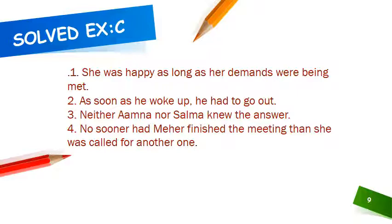Now it's exercise C time. All you need to do in exercise C is to join the sentences below with the conjunctions given in the bracket. The first, second, third, and fourth are solved for you: 'She was happy as long as her demands were being met.' 'As long as he woke up, you can see that he had to go out.' 'Neither Amna nor Salma knew the answer.' 'No sooner had Meher finished the meeting than she was called for another one.' All you need to do is solve the title page of checkpoint 3.